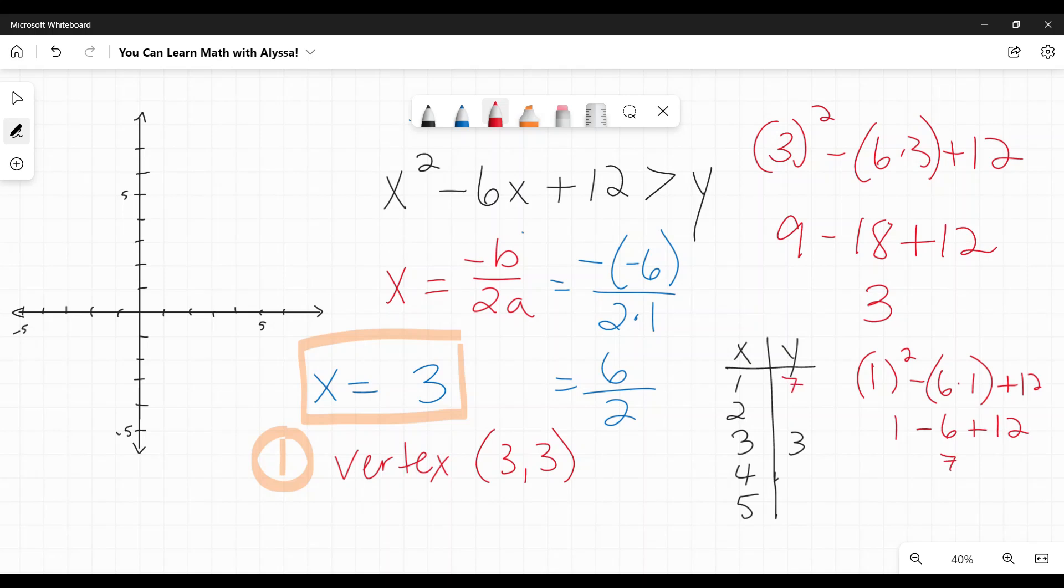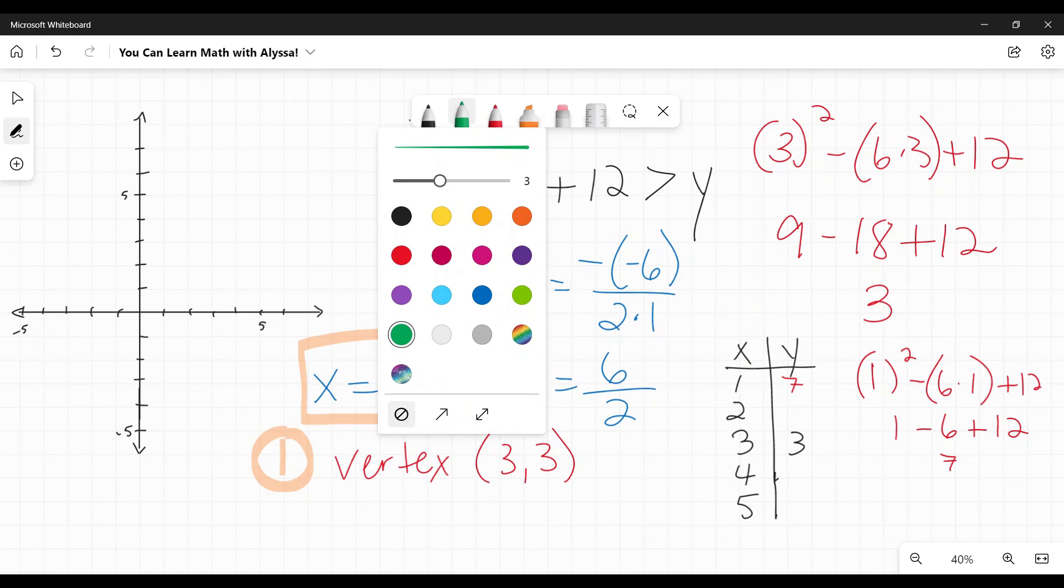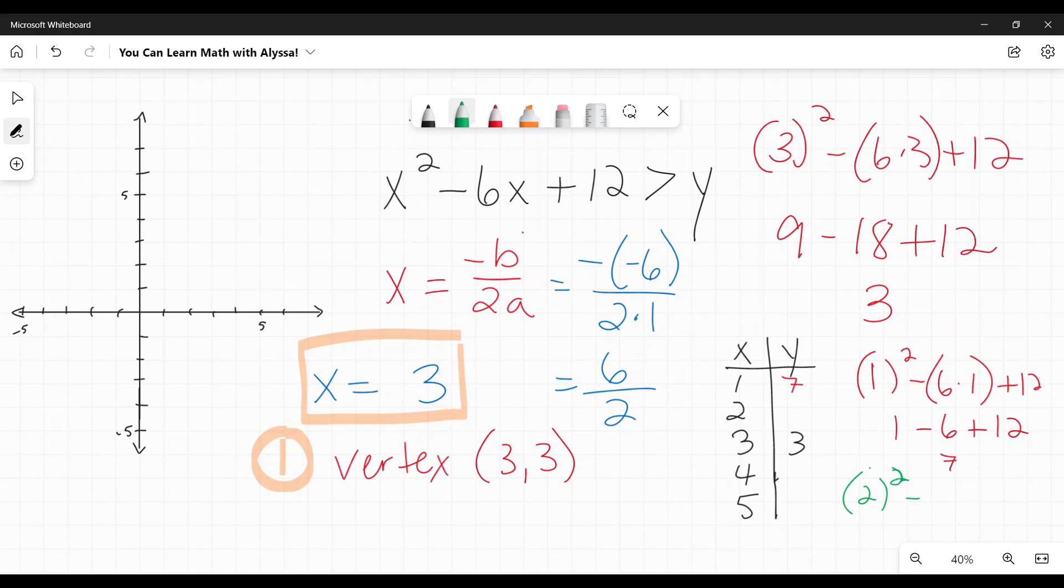So, when I plug 1 in, 1 squared minus 6 times 1 plus 12. 1 minus 6 is negative 5 plus 12 is 7. I'll put a little 7 right there. And my other one, let's change the color, just try to make this a little more easy to see. I'm going to put 2, 2 squared minus 6 times 2 plus 12. 4 minus 12 plus 12. Well, 4 minus 12 plus 12 is just 4. Now, these are symmetrical. Parabolas are symmetrical on either side of the vertex. So, I know that this is 4 and 7 on these other two sides, the other two points.